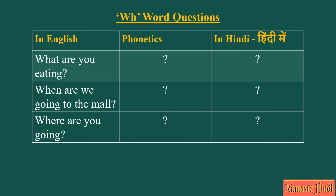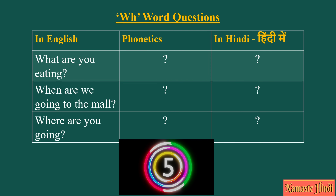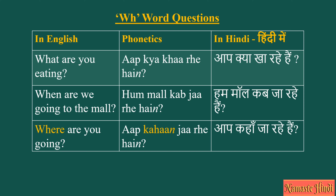WH word questions. What are you eating? Aap kya kha rahi hain? When are we going to the mall? Hum mall kab ja rahi hain? Where are you going? Aap khaan ja rahi hain?